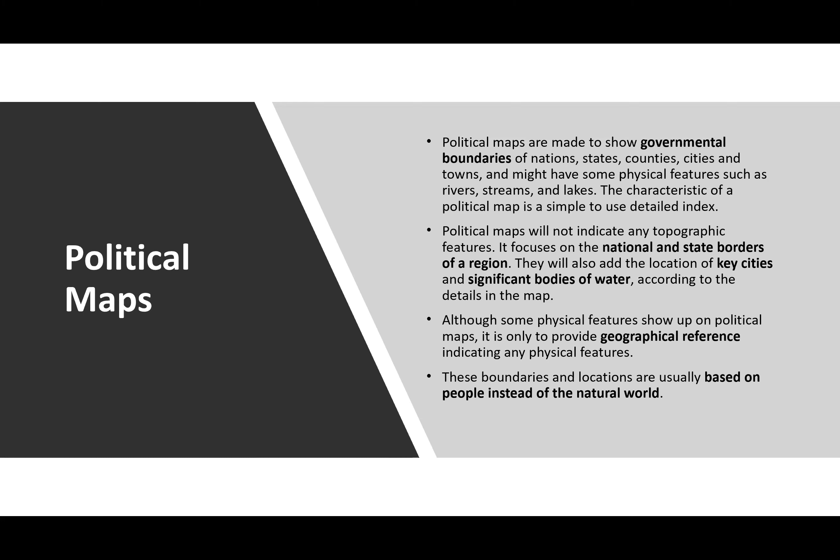Although some physical features show up on political maps, it's only to provide geographical reference. Interesting to note: the political boundaries on these maps are usually based on people instead of the natural world. As human beings, we have created these boundaries — it's an administrative and municipal thing, typically affiliated with government. We've taken something that isn't really physically there in some cases and created it as a political boundary between places.